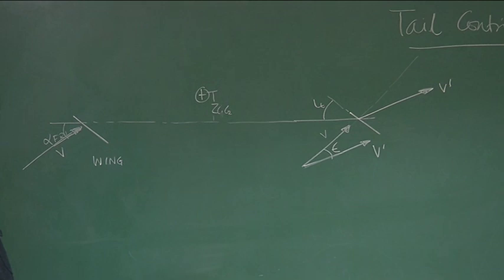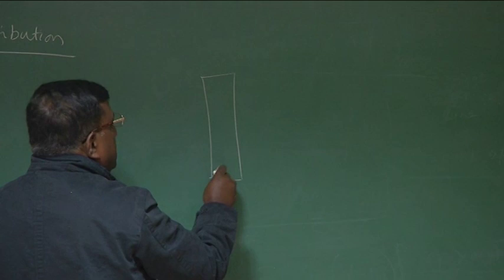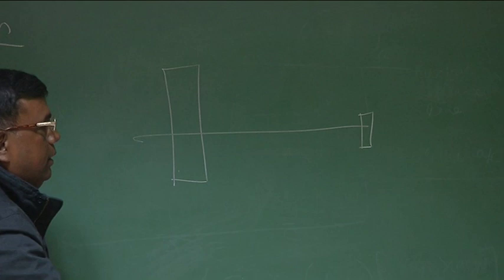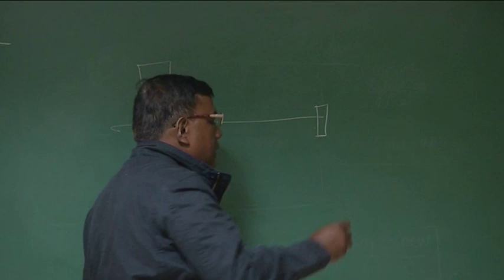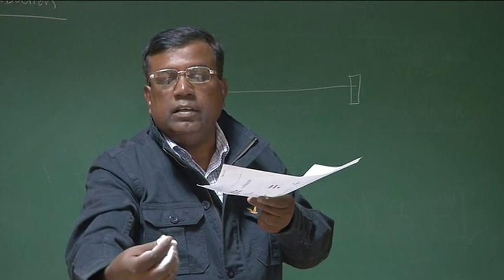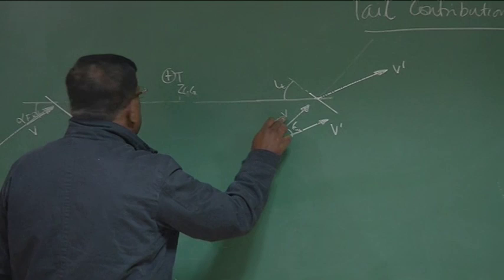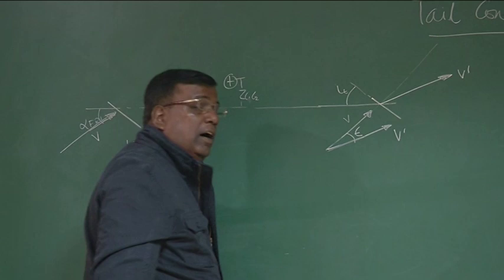Let me explain. If this is the wing and here there is a tail — because of lower and higher pressure, there are vortices and that induces a downward component at the tail. Because of vortices, a downward component will be induced at the tail. The velocity vector free stream was like this; because of this downward component, the velocity vector will be tilted downward. This is the free stream direction V, and because of downwash, this velocity vector is tilted.